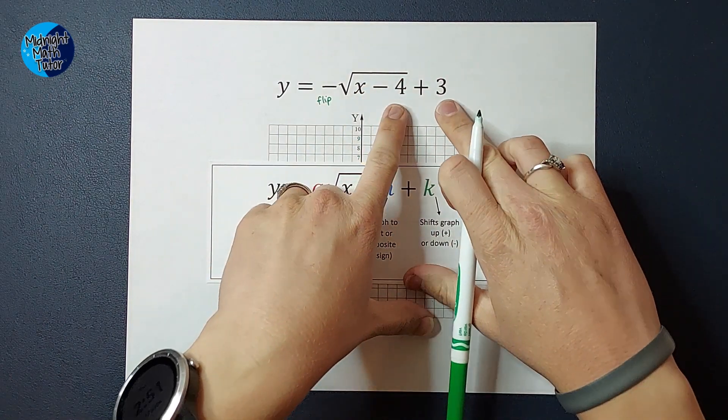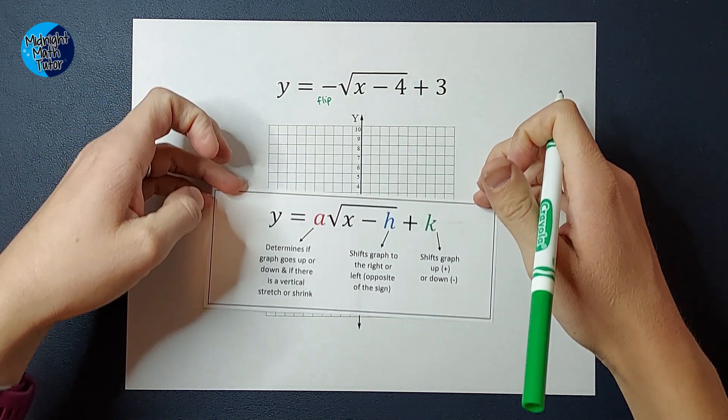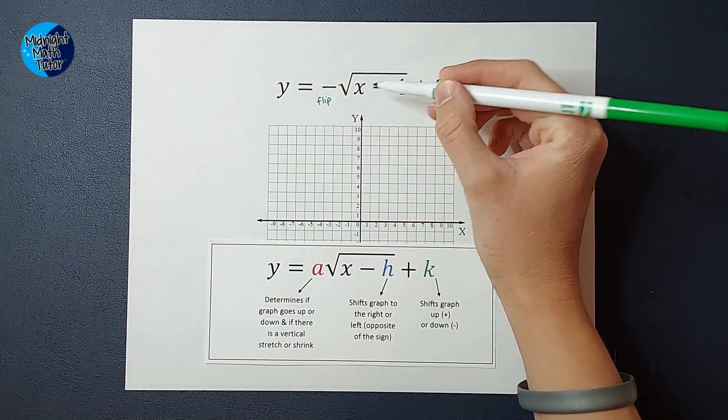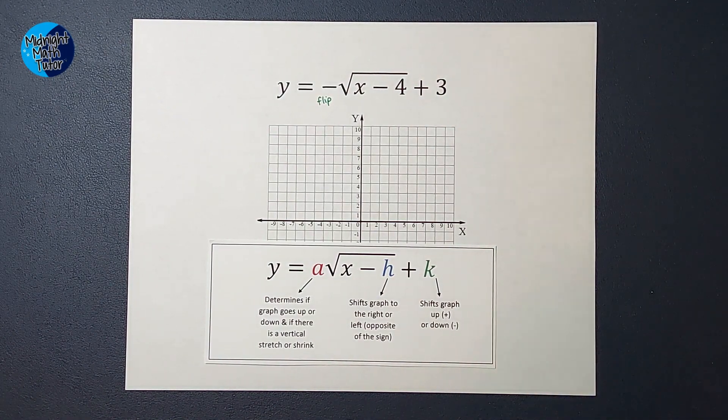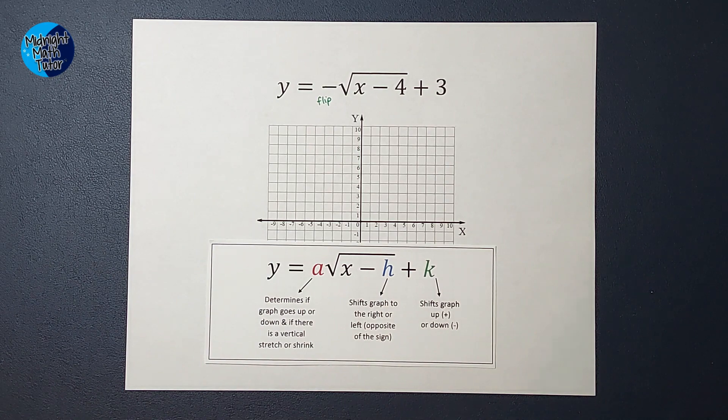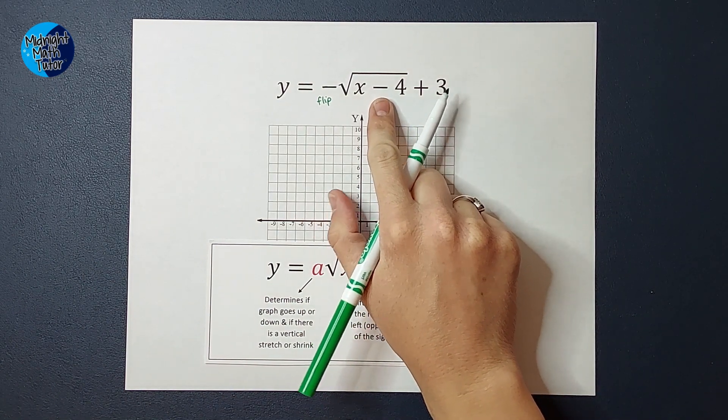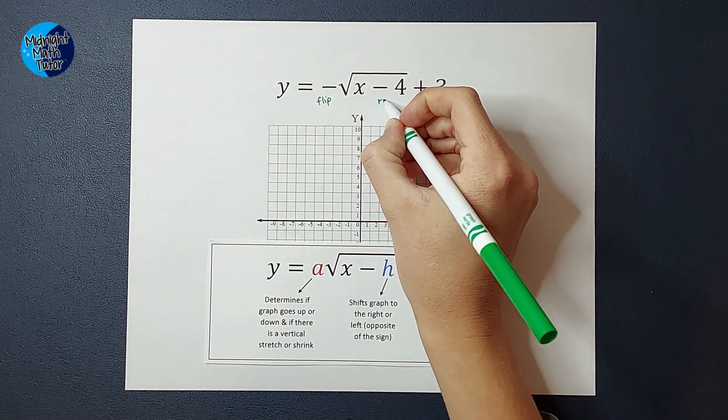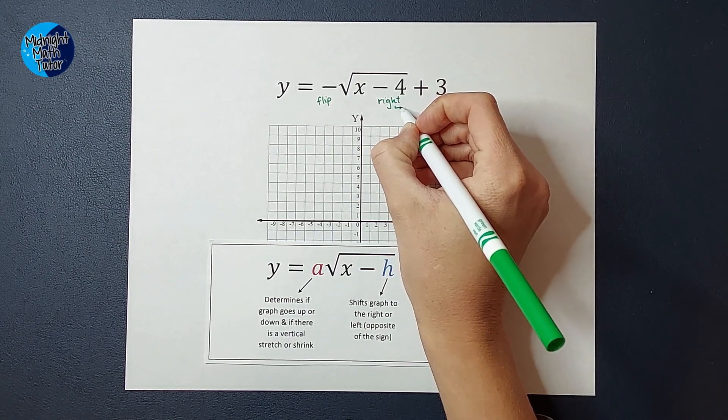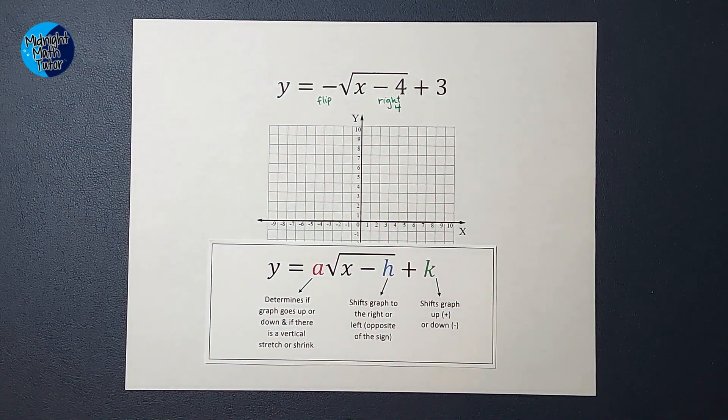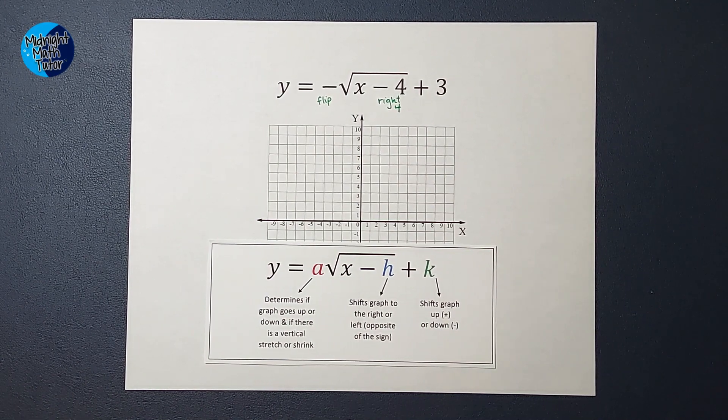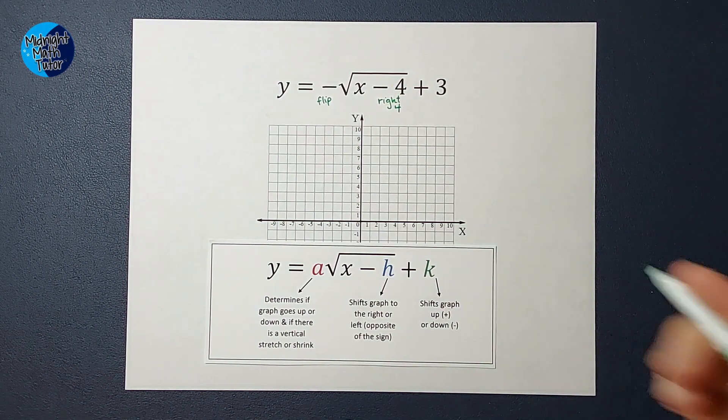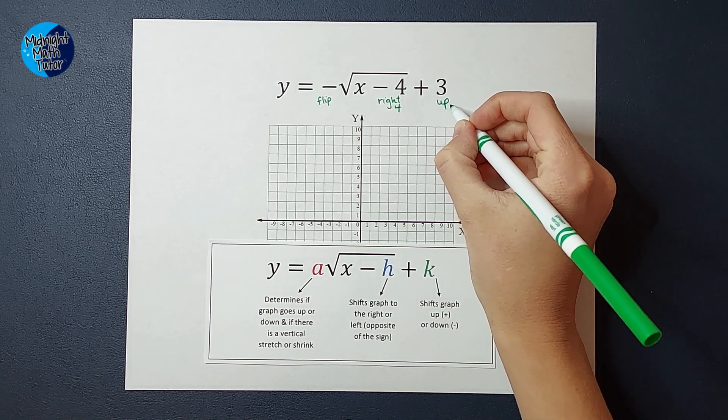And then the h and k tell me where my new starting point is. So on my parent graph, the starting point is 0, 0. Now, this number here, being added or subtracted under the square root, tells me how far my graph shifts to the right or the left. And we're actually going to do opposite of the sign. So negative 4 would usually make me think to the left 4, but we're actually going to go to the right 4. Shift our graph over. Now, the one added or subtracted on the back tells you how much we're going to shift up or down. Oh, I just dropped the pen or the marker on my shirt. Sorry, how much it goes up or down, and you stick with the sign on this one. So we're going to go up 3.